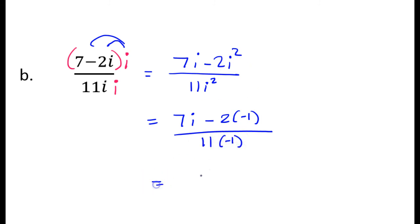So that is going to give us 7i plus 2. You can see how the i squared just turns a negative 2 into a positive 2. And the i squared turns a positive 11 into a negative 11. So if you see an i squared, it's just going to change the sign.